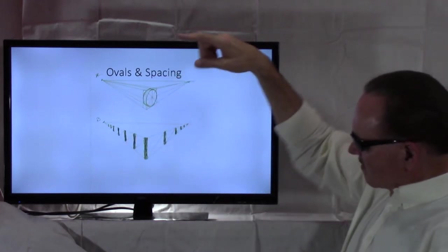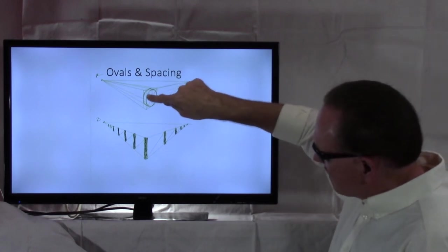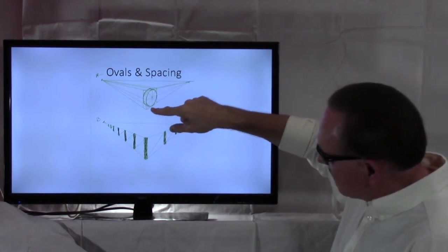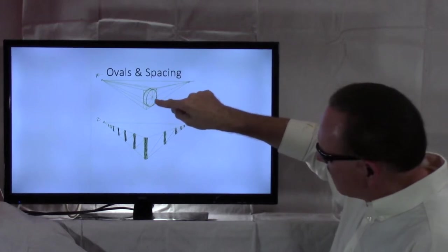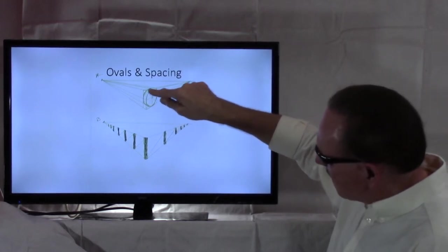In this particular case, what I did was after I drew this curve and this curve, I followed up with a curve here and a curve here, and then I developed an oval.